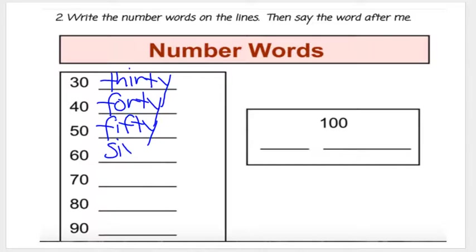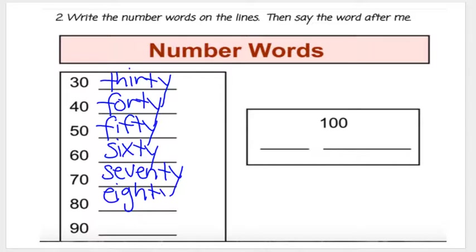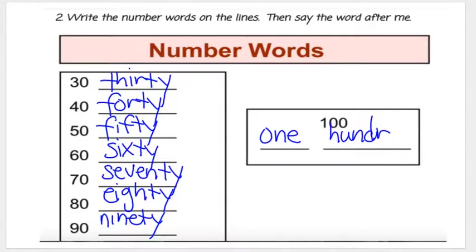Here's number sixty. Say sixty. Here's number seventy. Say seventy. Here's number eighty. Say eighty. Here's number ninety. Say ninety. And here is one hundred. One hundred.